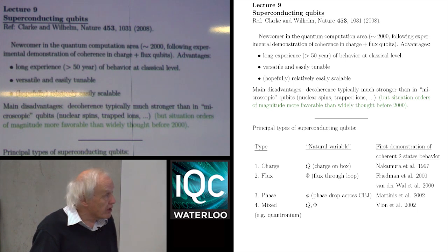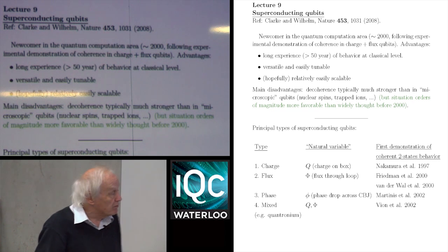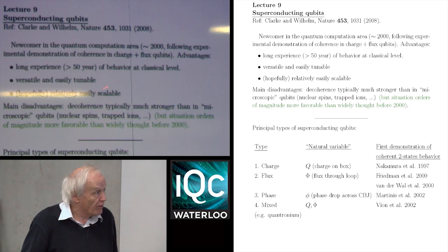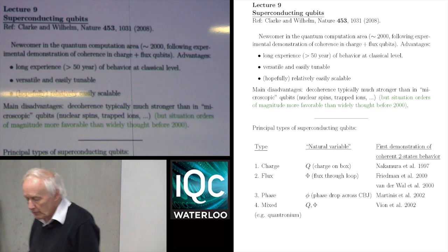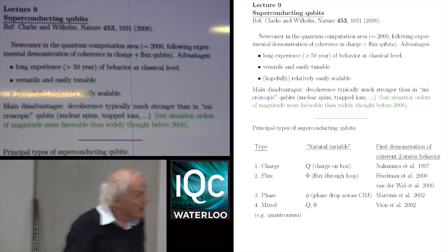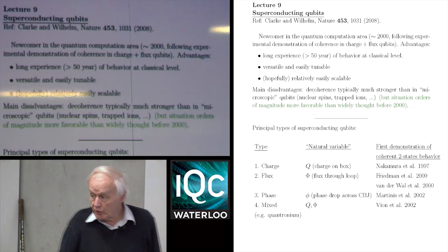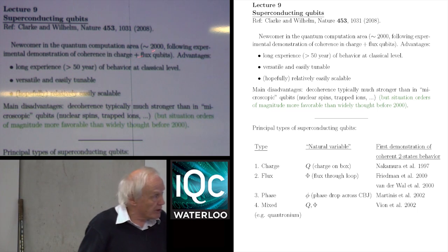The advantages of these superconducting qubits with respect to more microscopic systems involve the fact that, first of all, we've had a long experience of the behaviour of these Josephson systems at the classical level. The electrical engineering which has been developed in this connection is quite sophisticated, so one didn't have to go back and do that from scratch. These systems are versatile — there are lots of knobs you can use to tune them — and hopefully they're relatively easily scalable.